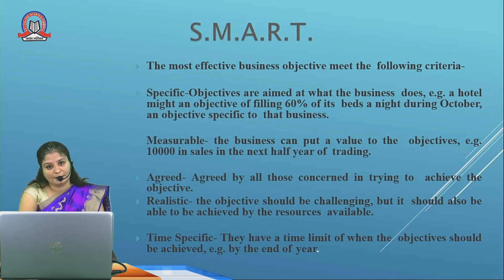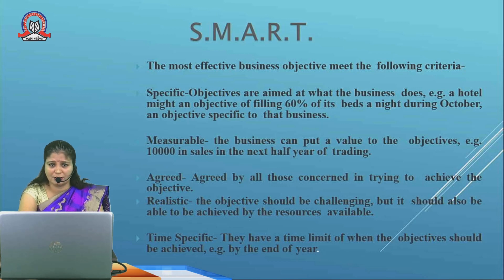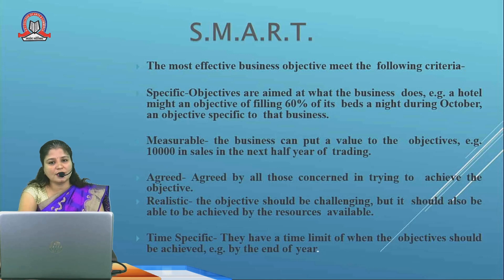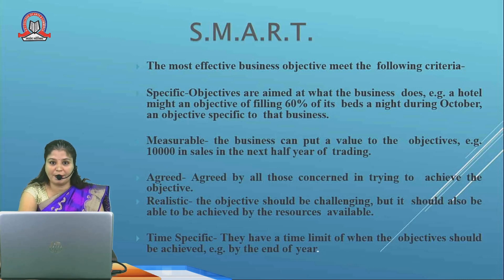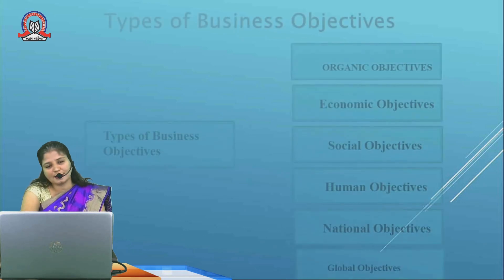Objectives can be analyzed using the word SMART. S stands for Specific — the objective should be very specific about what the business does; for example, a hotel might have an objective of filling 60% of its beds in a night. M stands for Measurable — the objective should be measured to see how much has been achieved. A stands for Agreed — all those concerned in achieving the objective must agree; it is a group activity. R stands for Realistic — the objective should be real, not fictitious. T stands for Time-specific — there should be a time limit; the objective must be achieved within that specified period.